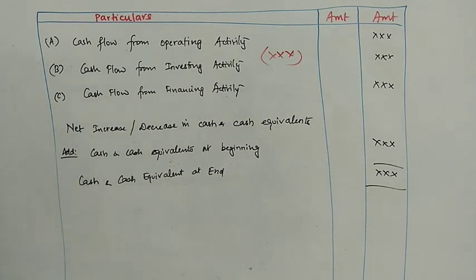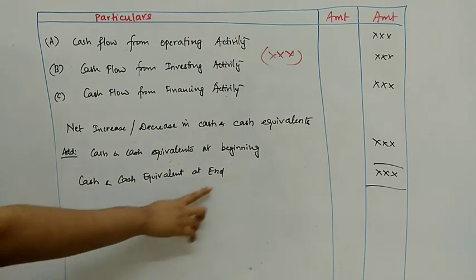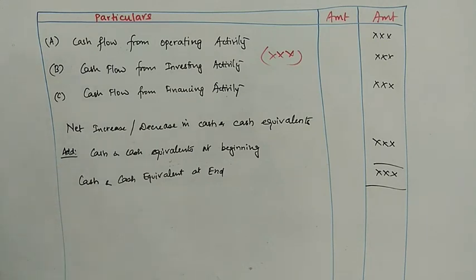We then add cash and cash equivalents at the beginning of the period. So: changes plus the starting balance. If we add these together, we get cash and cash equivalents at the end. So the cash flow statement tells you how much cash is available — your closing cash balance.